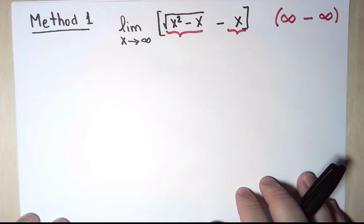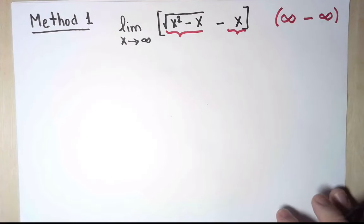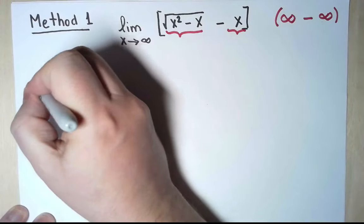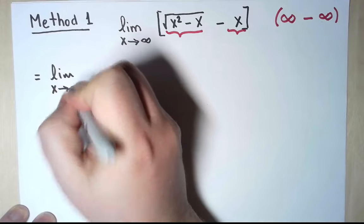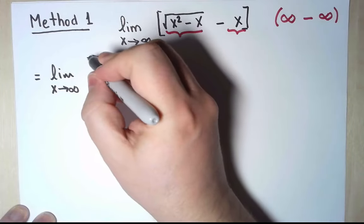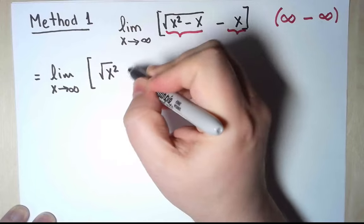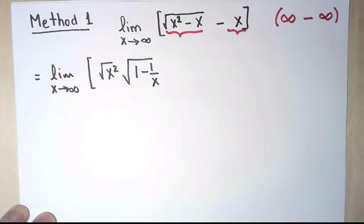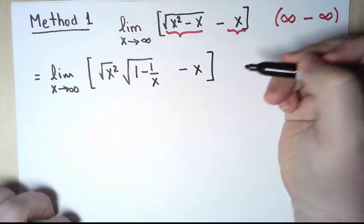So what can we do? One idea, which is common for limits involving infinity, is to try to factor the biggest possible term, and see if that helps. I'm going to do that slowly. Inside the square root, the largest term I can possibly factor is x squared. So let me begin by doing that, and I'm going to rewrite that as the square root of x squared times the square root of 1 minus 1 over x. That's what happens when I factor x squared. And all of this is minus x.